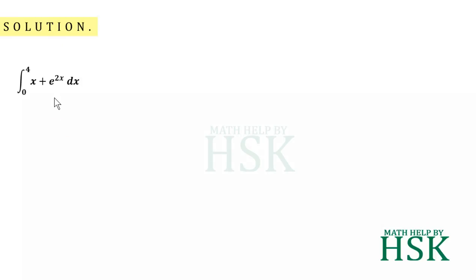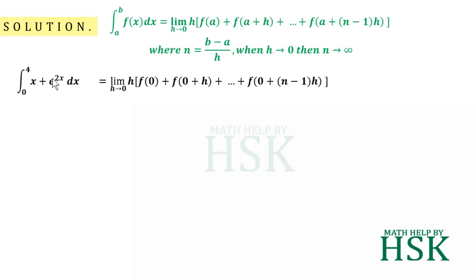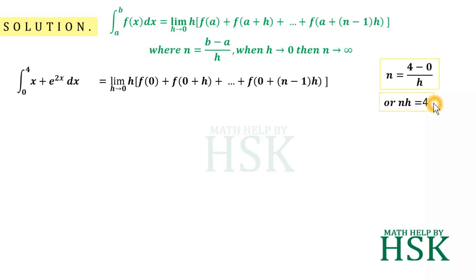To solve this integral, we are going to apply the formula of definite integral as the limit of sum. In this formula, if the lower limit is a, we get f(a) + f(a+h) and so on up to f(a + (n-1)h) as the sum. Because the lower limit here is 0, applying this formula gives the definite integral as the limit of h tending to 0, times h times [f(0) + f(0+h) + ... + f(0+(n-1)h)]. Since the upper limit is 4, we get nh = 4.